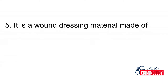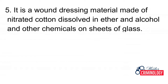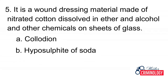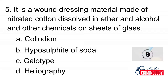Question 5: It is a wire dressing material made of nitrated cotton dissolved in ether and alcohol and other chemicals on sheets of glass. A. Collodion, B. Hyposulfite of soda, C. Color type, D. Heliography. Answer: A. Collodion.